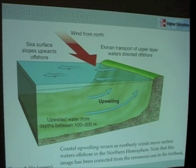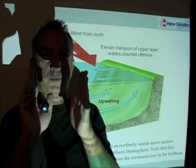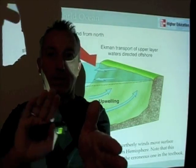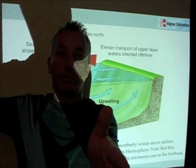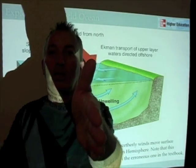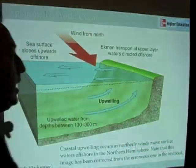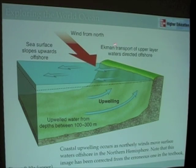If we have a wind blowing from the north in the northern hemisphere, the water is going to move off towards the right. If it's blowing down the coast of California, then the water is going to move offshore — towards the west. So winds from the north, because of Ekman Transport, are causing water to flow off towards the west, creating upwelling.